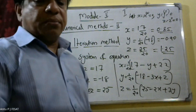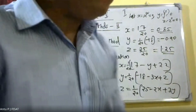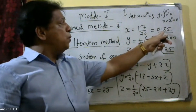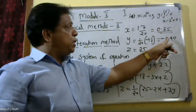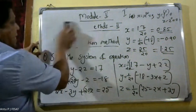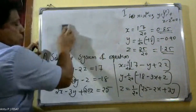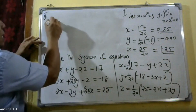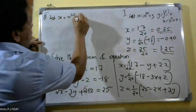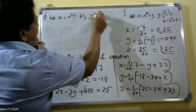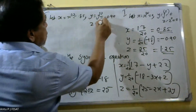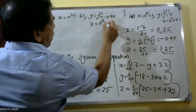Now we proceed to iteration number 2. We take the values from iteration 1: x raised to 1 = 0.85, y raised to 1 = -0.90, z raised to 1 = 1.25. We substitute these into the iteration formulas to find new values x raised to 2, y raised to 2, and z raised to 2.